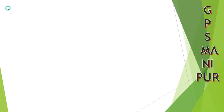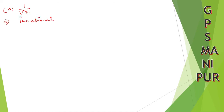Roman number 4: 1 divided by root 7. Root 7 is an irrational number, so this will become an irrational number.